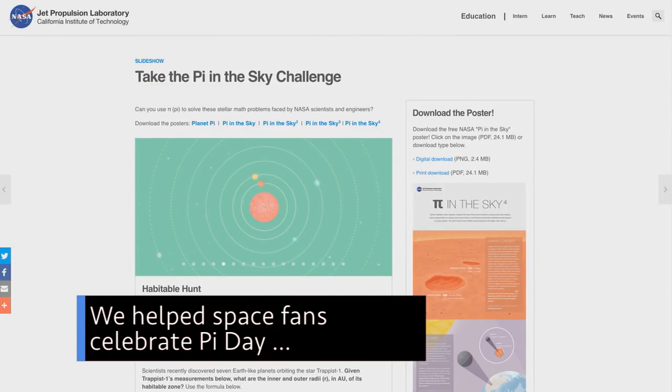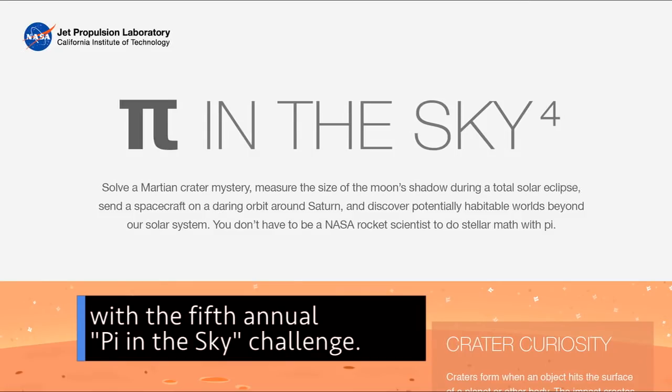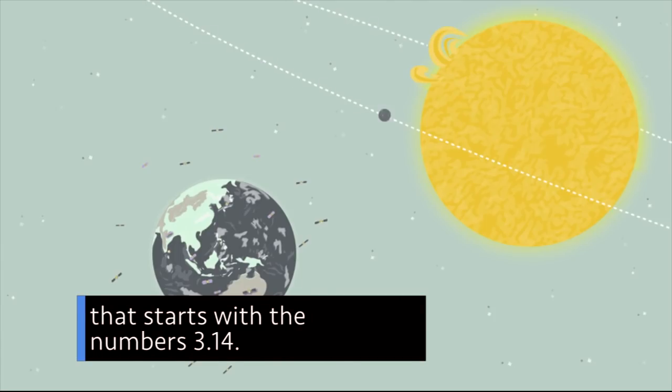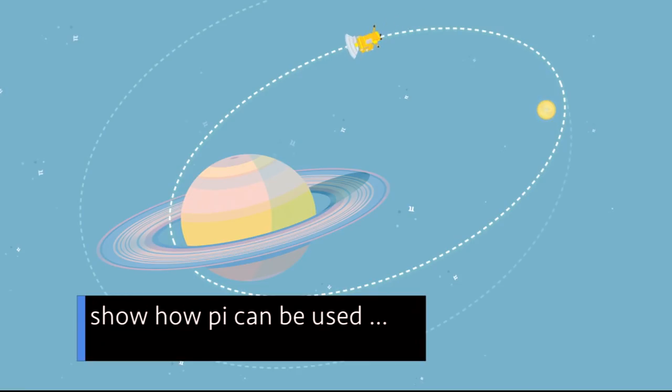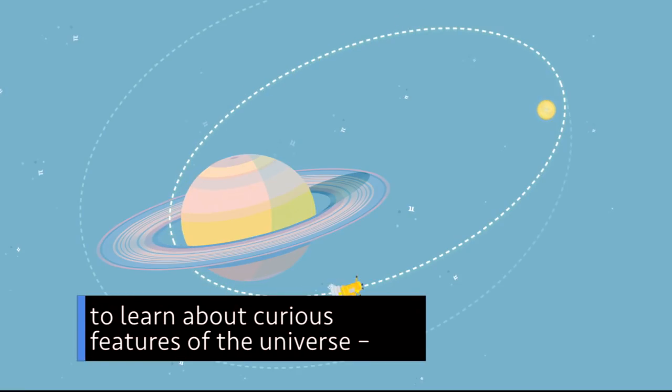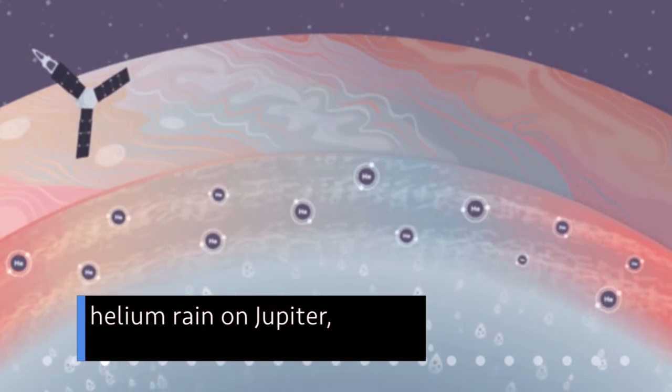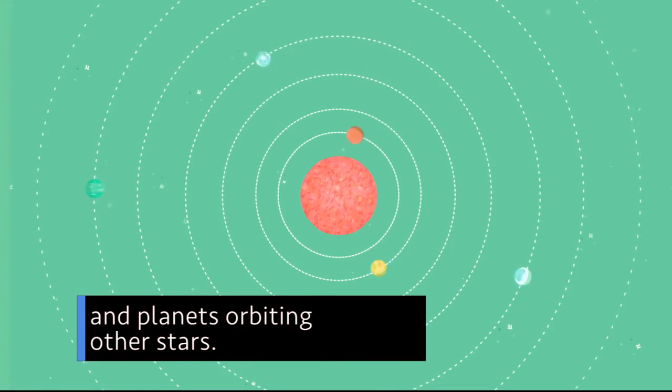We helped space fans celebrate Pi Day on March 14 with the fifth annual Pi in the Sky Challenge. Pi is the mathematical constant that starts with the numbers 3.14. The challenge's math problems show how Pi can be used to learn about all kinds of curious features of the universe, including earthquakes on Mars, helium rain on Jupiter, and planets orbiting other stars.